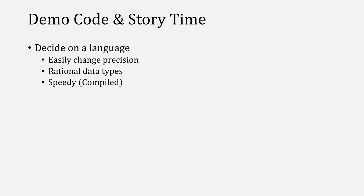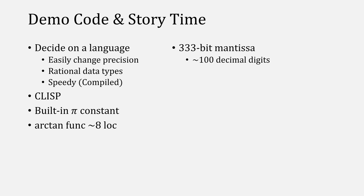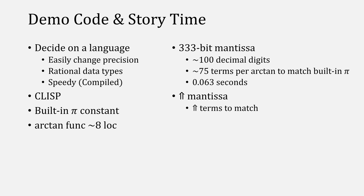Longtime fans of this channel will know that I provide a lot of code and documentation to accompany each of these videos. I usually don't talk about the development process, but in this case it bears mentioning. The first step is to decide on a language. In my case, I required that I needed to change the precision very easily, and that it had to have support for rational data types, as well as being pretty speedy, compiled preferably. I ended up settling on CLisp, which has its own built-in Pi constant, and my arctangent function ended up being 8 lines of code long. Then, using 333 bits for the mantissa, I was able to gain about 100 decimal digits of Pi. It required about 75 terms per arctangent in order to match the built-in Pi. This took about 0.063 seconds. I then raised the mantissa, which required raising the number of terms, in order to get this to match actual Pi. What I noticed was that the built-in Pi still matched the actual Pi. I raised the mantissa, and the same thing happened again. It turns out that after looking at the source code for CLisp, their Pi constant isn't actually constant.